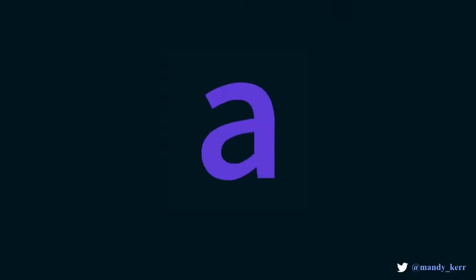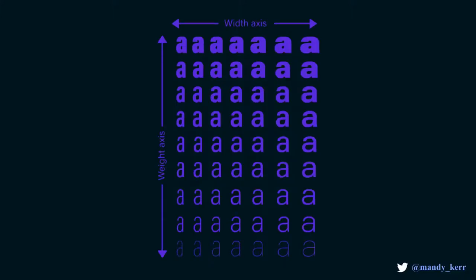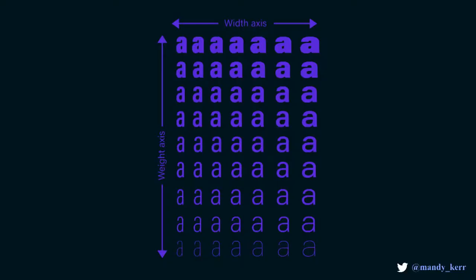Because the axis is interpolated, we can animate between the values and create really smooth transitions. And we're not just limited to a single axis — a variable font can contain many different axes doing many different things. As you can see in the image, the interpolation applies to all combinations as well, so you can have a wide, bold font, or a narrow, thin font.